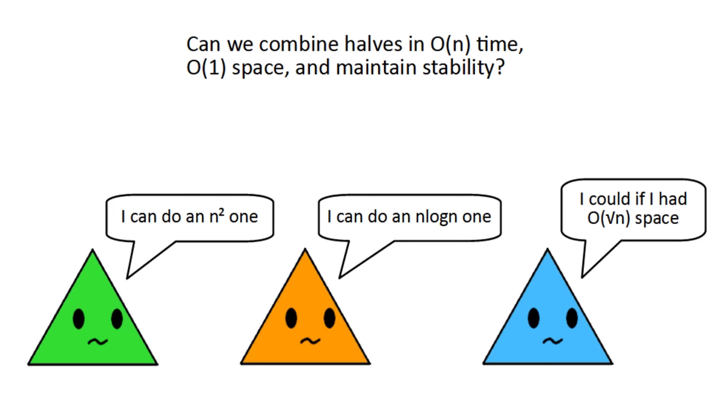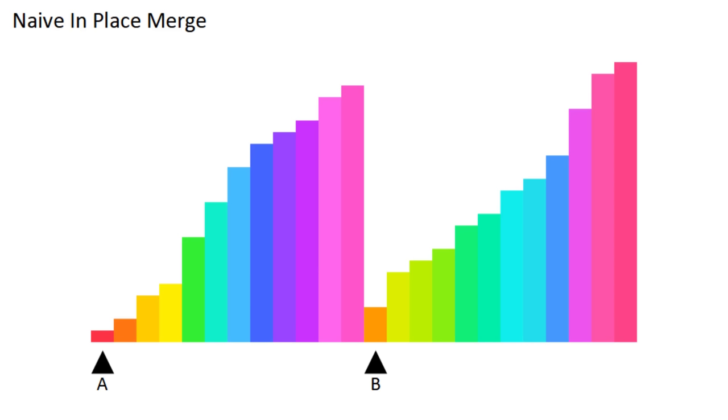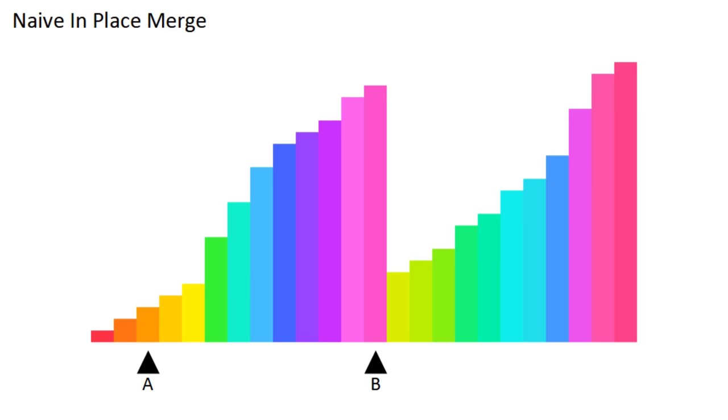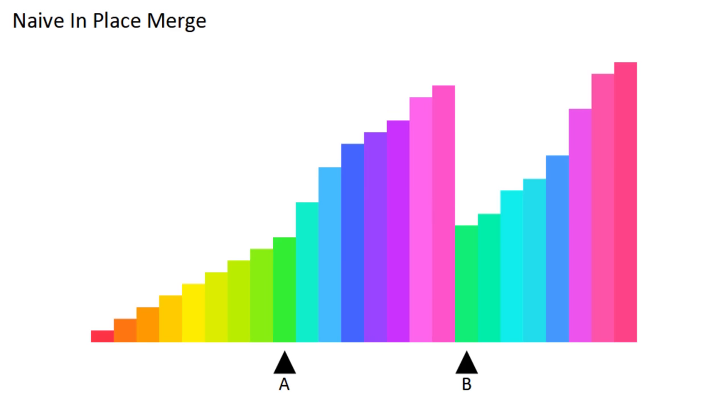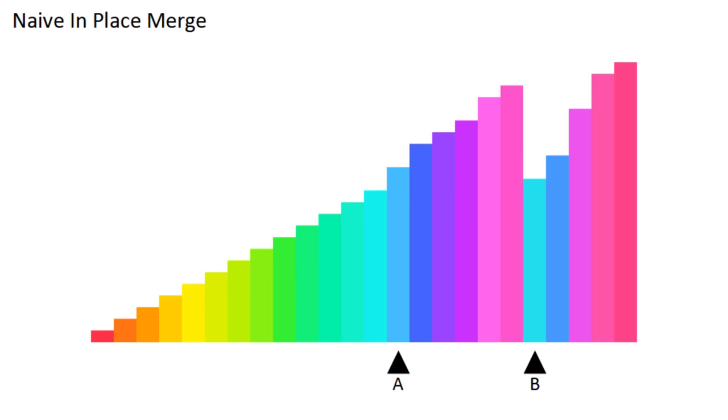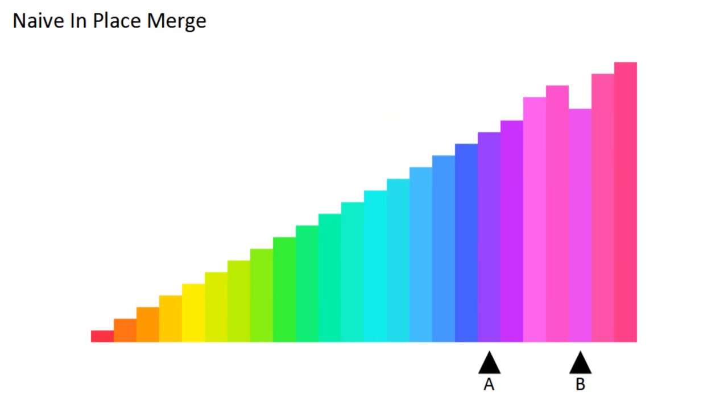One idea is as follows. You have two current positions like usual, A and B. If A is smaller, you move on and check the next one. If B is smaller, you insert that piece at A, shift over the rest of the left sublist, and move both A and B over. This is in place and stable, but shifting everything over makes it take n squared time, so you may as well use insertion sort at that point.